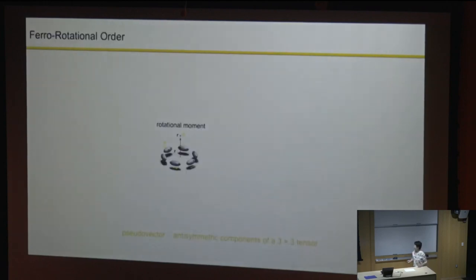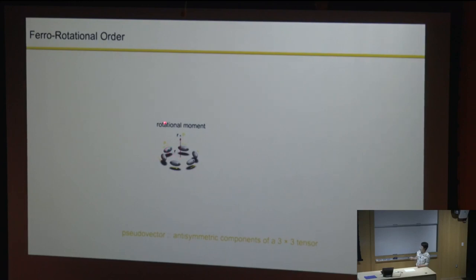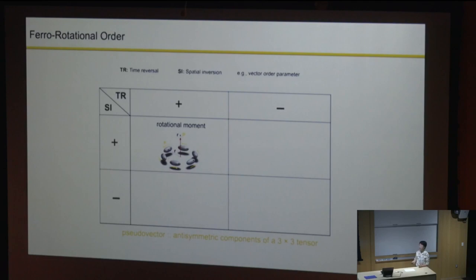The ferrorotational order is described by a ferrorotational moment—mathematically, you do a cross product of the dipolar moment with respect to its location: R cross P, summed over all of them. It's a pseudovector, and whenever we have a pseudovector, we ask what is its behavior under spatial inversion and time reversal operations, since we have electric field versus magnetic field—one breaks spatial inversion, the other breaks time reversal.